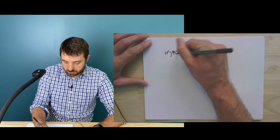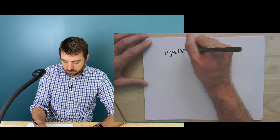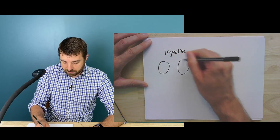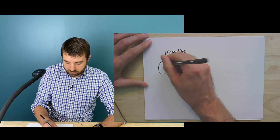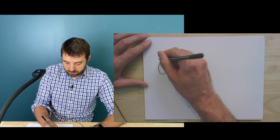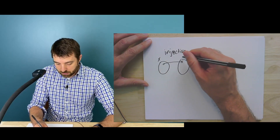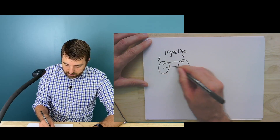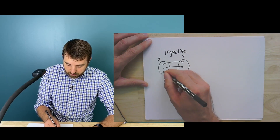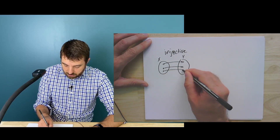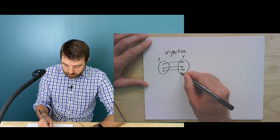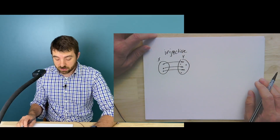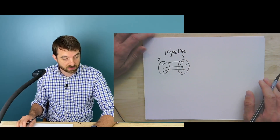Injective functions — in pictures, this is the functions where everybody maps to someone different. Every point in the domain maps to a distinct element in the co-domain and it looks almost like a kind of matching. It might be that there are other things in the co-domain that nobody maps to by this function, but that's fine — this is injective.